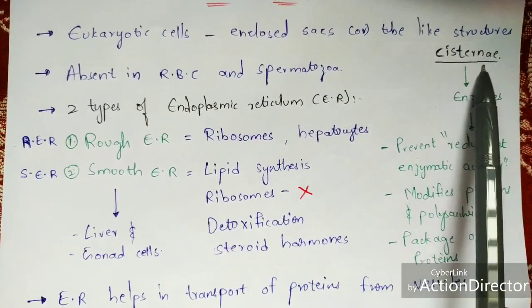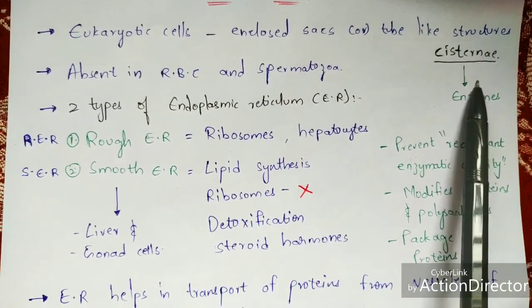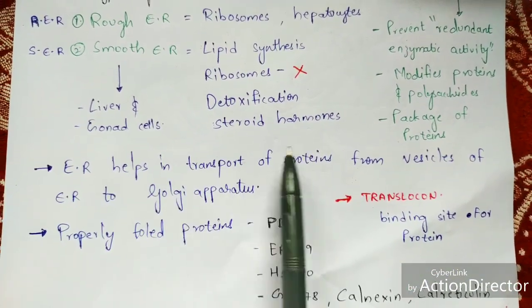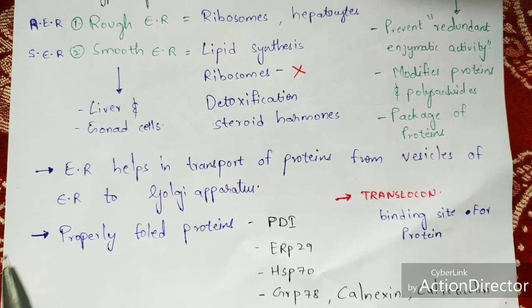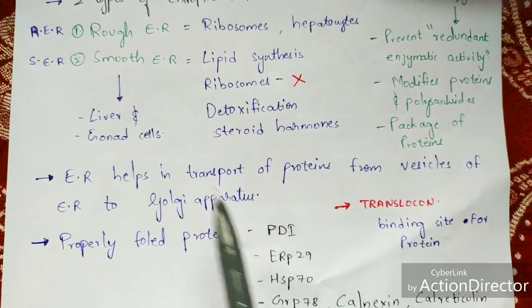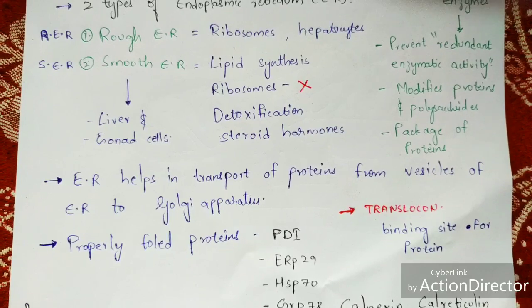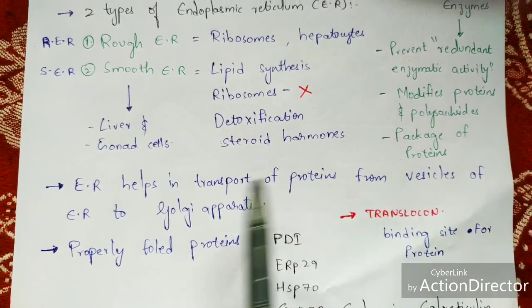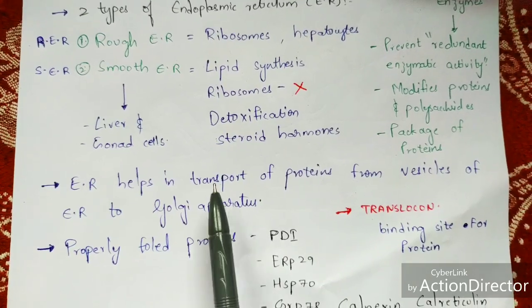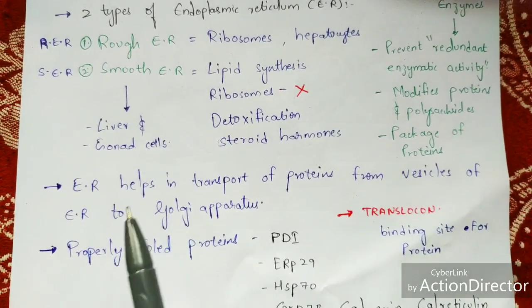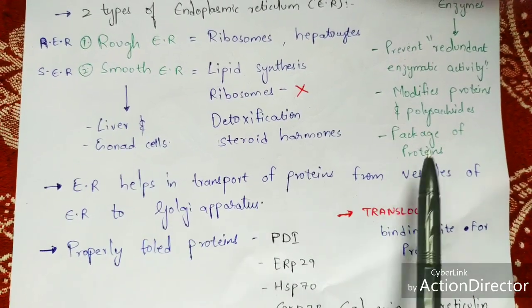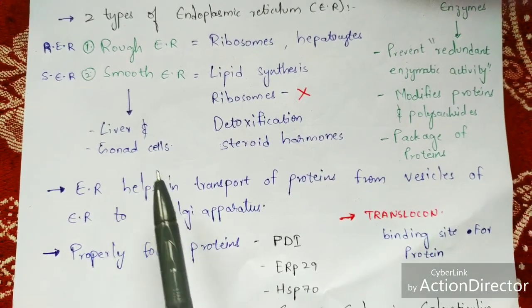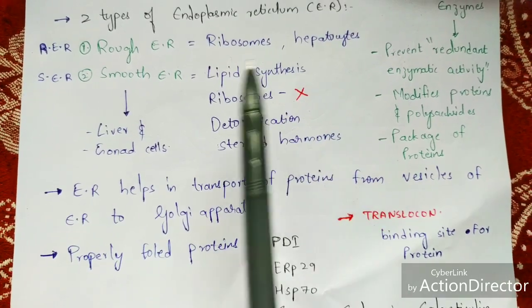The main function of the endoplasmic reticulum is that it helps in the transport of proteins from the vesicles of the endoplasmic reticulum to the Golgi apparatus. Vesicles are present in the endoplasmic reticulum itself, and those vesicles consist of proteins which get transported to the Golgi apparatus.